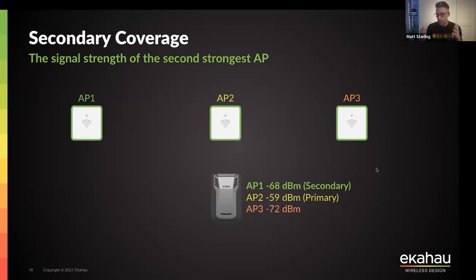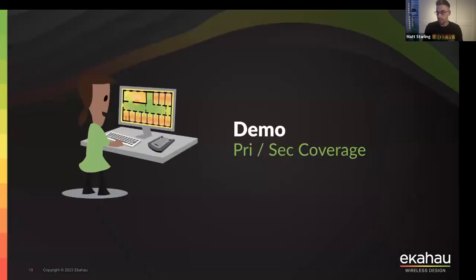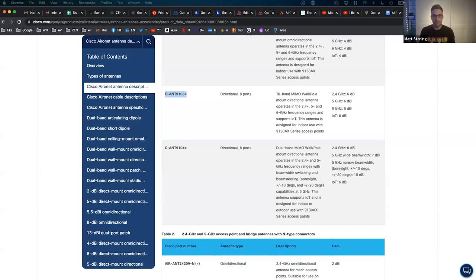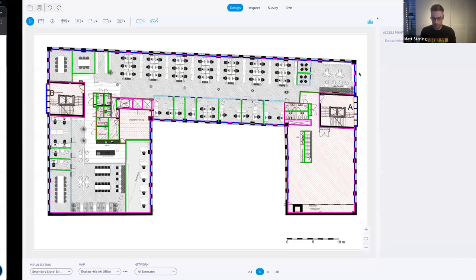To build a really efficient and high-performing wireless network, we don't just rely on primary coverage — we also need secondary coverage. Now I'm going to hand over to Mac for a great demo of some of those acronyms we've just covered, in the new Echo AI Pro 11.2.